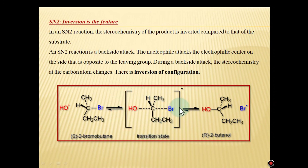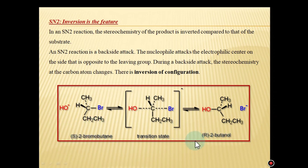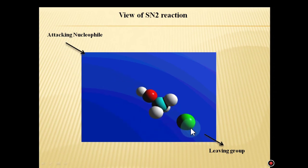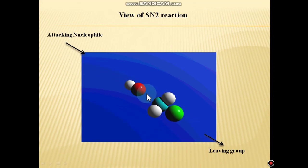This is the transition state. The removal from the front side and attachment from the back side means the configuration is reversed. Starting from S-2-bromobutane, the product is R-2-butanol. You can also see in this 3D diagram the removal of the leaving group and the attack of the nucleophile, resulting in inversion.